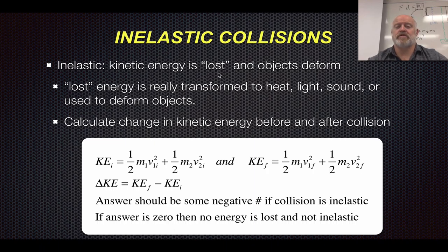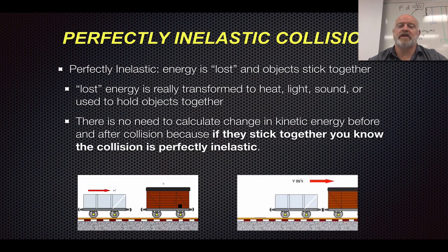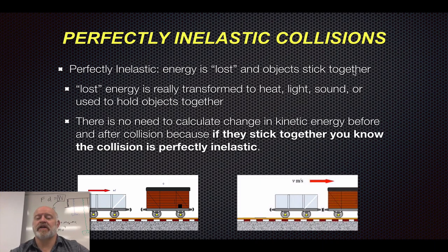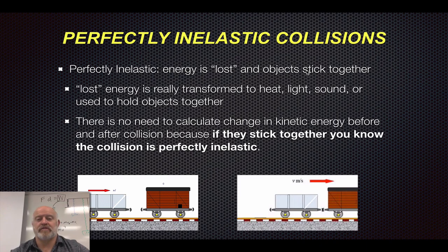So that's our inelastic collision — we lose energy and objects deform as they collide. One thing they don't do is stick together; they hit and bounce off each other. That's a key distinction, because in a perfectly inelastic collision, what makes it 'perfect' is that the objects still lose energy and when they collide they actually stick together. A great example is a train car rolling and hitting another train car — they latch together and become one. A football tackle is another example where you hit somebody, tackle them, and go to the ground together. A slap shot in hockey would not be perfectly inelastic because the puck and stick separate afterwards.